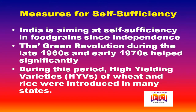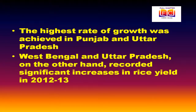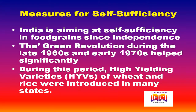India has been aiming at self-sufficiency in food grains since independence and has adopted all measures to achieve this. The Green Revolution during the late 1960s and early 1970s helped significantly, with high-yielding varieties of wheat and rice introduced in many states. The highest growth rate was achieved in Punjab and Uttar Pradesh, where food grain production jumped from 7.23 million tons in 1964–65 to an all-time high of 78.9 million tons in 2012–13.